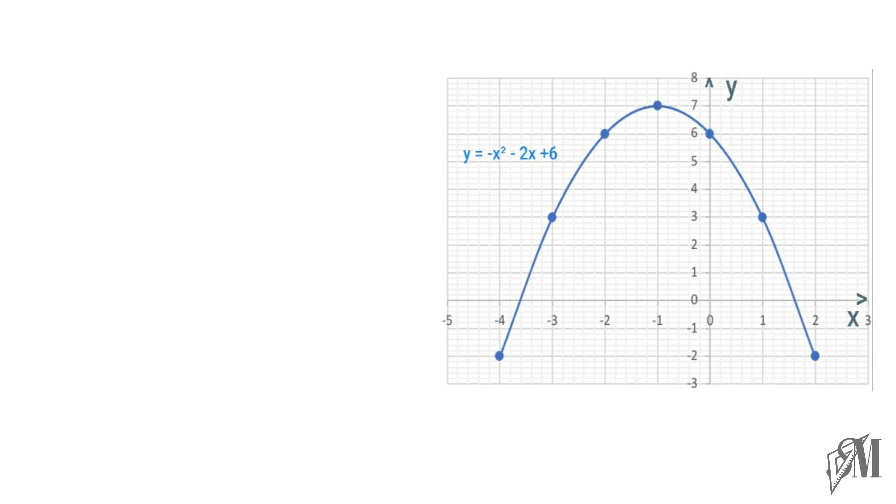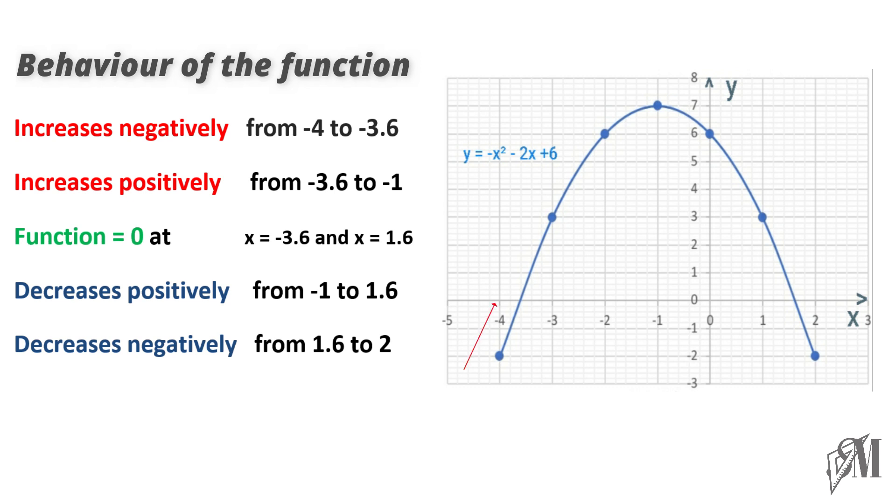When paying attention to the behavior of the function, it increases negatively from minus 4 to minus 3.6, and it increases positively from minus 3.6 to minus 1. It is clear at minus 3.6 and 1.6 the function is equal to 0, whereas the function decreases positively from minus 1 to 1.6, and decreases negatively from 1.6 to 2.